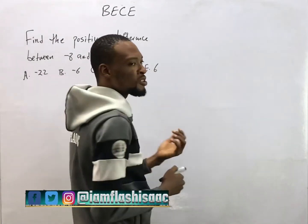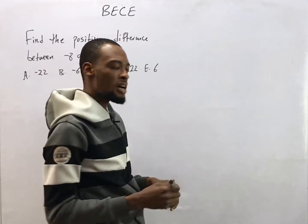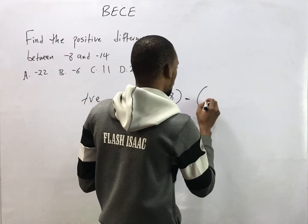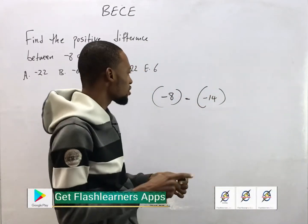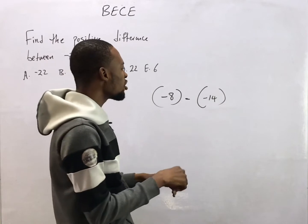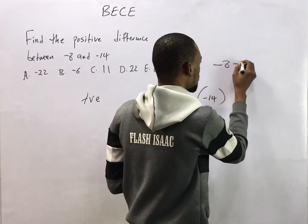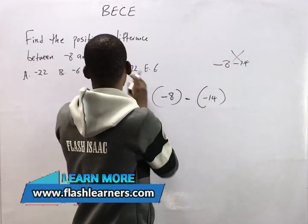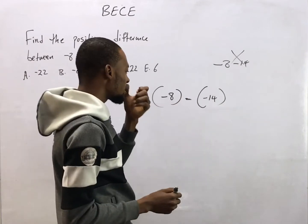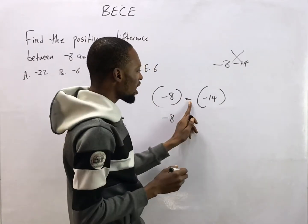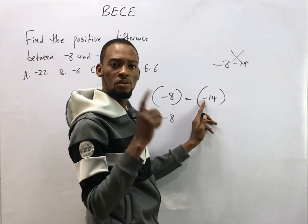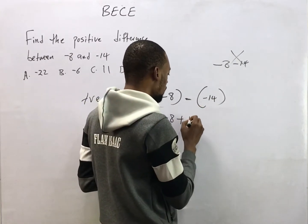It simply means minus 8 minus minus 14, so we are subtracting the numbers. Now don't make the mistake of saying the difference is minus 8 minus 14 — this is wrong, because this number itself is carrying minus and the operation you are doing is also minusing. So you have minus 8, then minus and minus — minus times minus gives you plus. So this turns to plus 14.